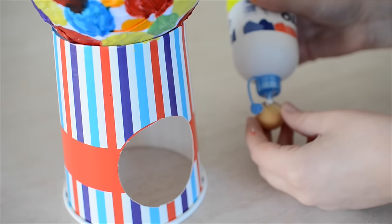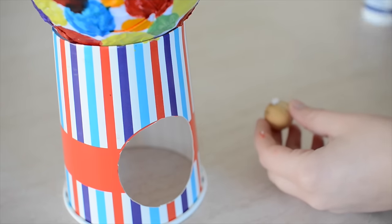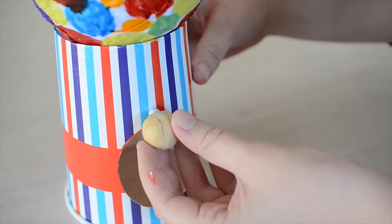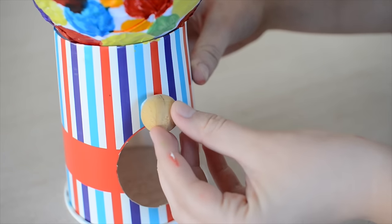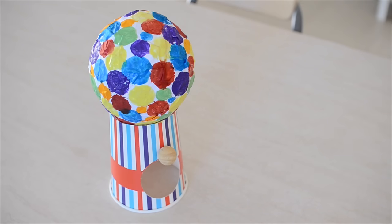The last thing that I decided to do, which is completely optional, is to glue a small wooden ball just above the doorway so it looks like the coin pusher. You don't have to do this step; I just felt like it was the perfect finishing touch.